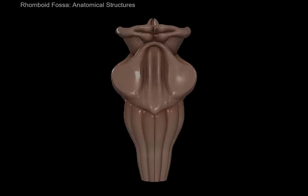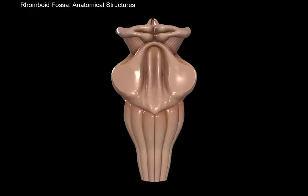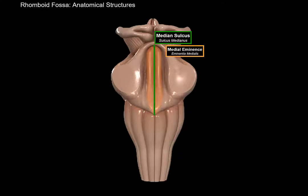Let's focus on the anatomical structures of the rhomboid fossa. First, there's a groove in the middle called the median sulcus, which divides the rhomboid fossa into two symmetrical halves. The median sulcus goes from the central canal of the spinal cord to the aqueduct of the midbrain. On either side of the median sulcus are elevations called the medial eminence, underneath which the motor nuclei of the brainstem are usually situated. The rhomboid fossa is also crossed by myelinated nerve fibers called medullary striae, dividing the fossa into an upper part and a lower part.